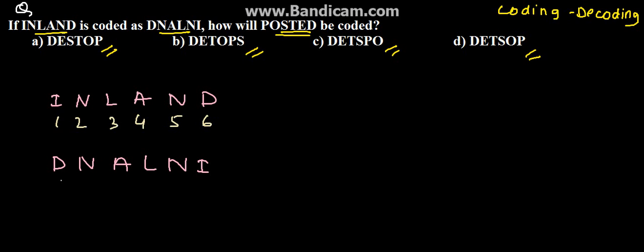We can see D is 6, N is 5, A is 4, L is 3, N is 2, and I is 1. That means INLAND is coded as DNALNI by reversing the letter positions.